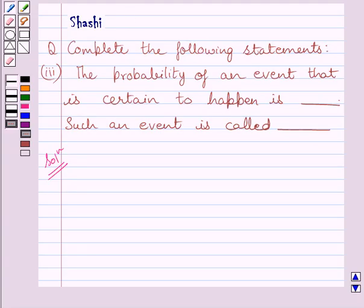We know we always get a number less than 7 in a single throw of dice. So, getting a number less than 7 is a sure event. So, if we are required to find probability of getting a number less than 7 in a single throw of dice, it is equal to 6 upon 6.